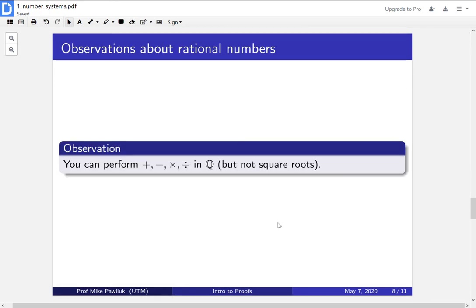So going back to what sort of operations we can perform. Now if we only use rational numbers, we can perform addition, subtraction, multiplication, and division. So we basically have everything we want. The only thing we can't do is square roots, and I guess logarithms as well. But these are the four basic operations, and you can do a lot of work with them.